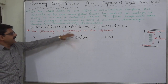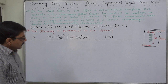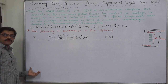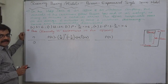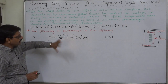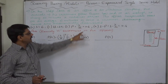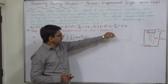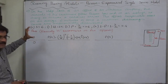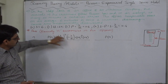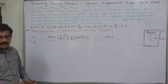We want to find out the probability of exactly n customers in the system, where n can take any value from 0 to anything. We have already discussed how to arrive at this particular formula in one of the previous lectures, so we are going to directly use this formula in this lecture without deriving it again.